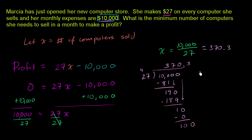But this is enough information for us to answer our question. What is the minimum number of computers she needs to sell in a month to make a profit? Well, she can't sell a decimal number of computers, a third of a computer. She could either sell 370 computers. If she sells 370 computers, she's not going to get to break even, because that's less than the quantity she needs for break even. So she needs to sell 371 computers in a month to make a profit.